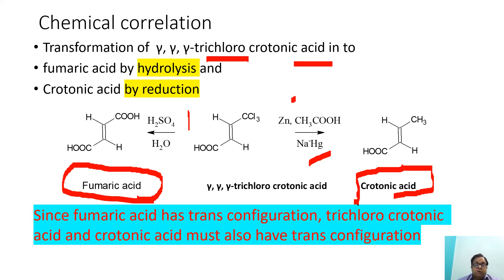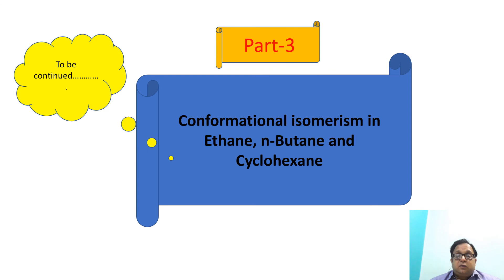The key point here is that fumaric acid has the trans configuration. Therefore, trichlorocrotonic acid and crotonic acid must also have the trans configuration. This is not an absolute method — it is based on chemical correlation: if one derivative has a known configuration, then its precursor and successor should have the same configuration. In the next part, we will discuss conformational isomerism in ethane, butane, and cyclohexane. Till then, Namaste.